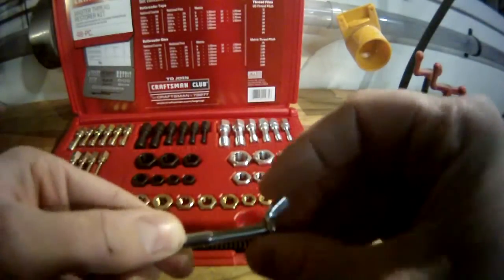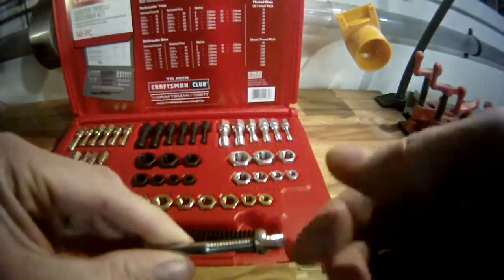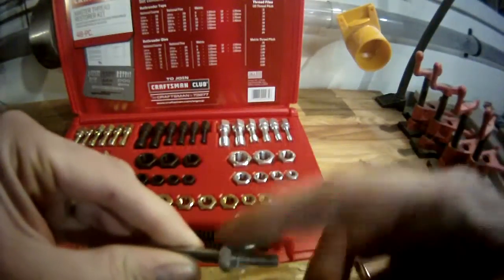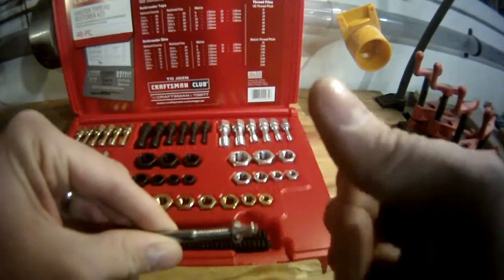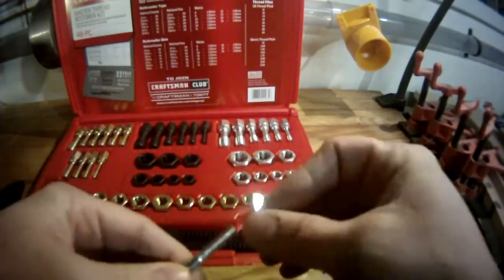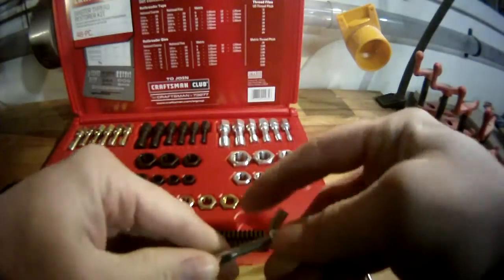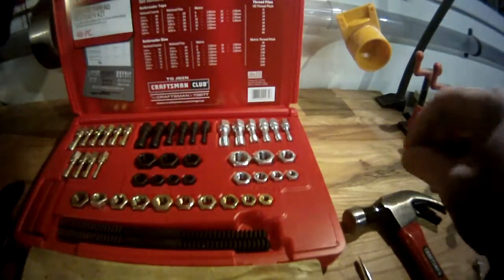We'll take that same wing nut that wasn't able to thread all the way on before. Now it's just a very light tap of the finger - you can see it go all the way around. Our thread restoration kit certainly did its job. Now let's compare that to how a tap and die performs for the same task.